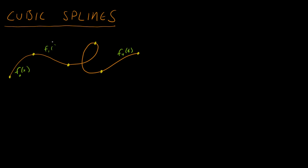This is a function of time. At time equals zero, our roller coaster is going to be at the start; at time equals one it'll be at the next point; at time equals two, three, four; and finally at time equals five we get to the end of the f₄ section. So we have five cubic interpolations, denoted by f₀, f₁, f₂, f₃, f₄.